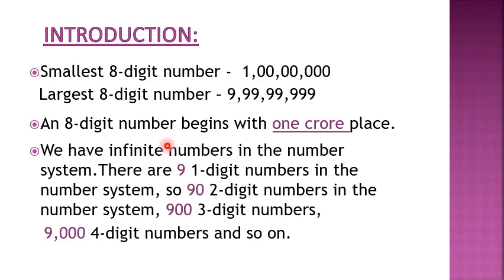Children, we have infinite numbers in the number system. Infinite means we cannot count how many numbers there are in total. But at least we can know how many one-digit numbers, two-digit numbers, three-digit numbers, four-digit numbers, and so on there are. Now there are nine one-digit numbers in the number system. If we start counting from the number 1 to number 9 and count on our fingers, we find that there are nine one-digit numbers.